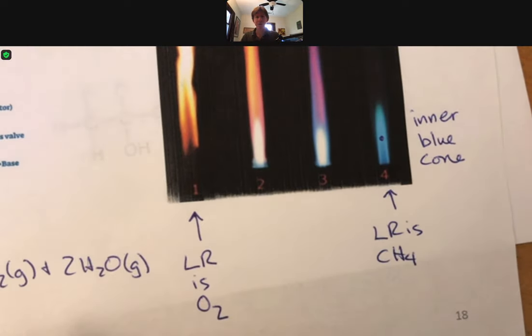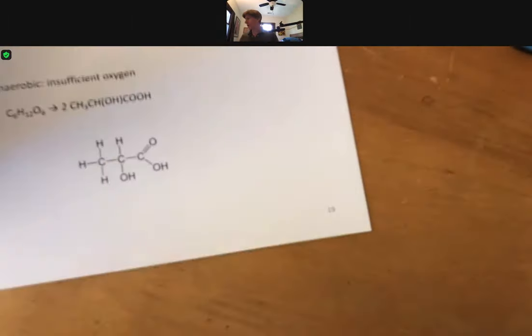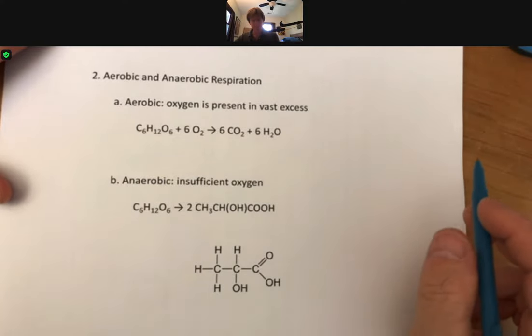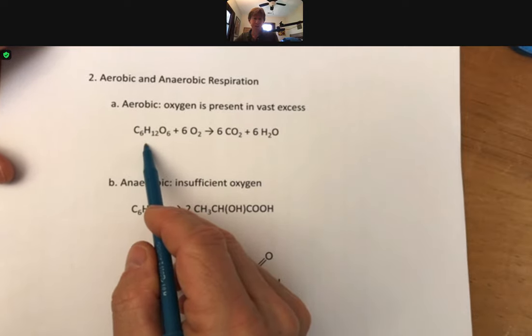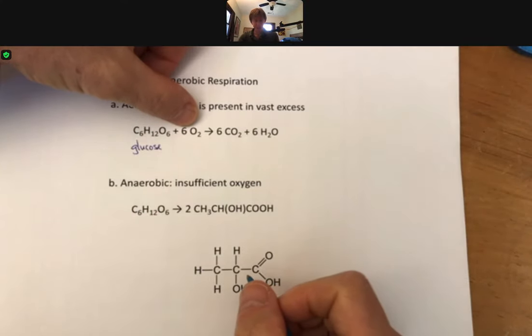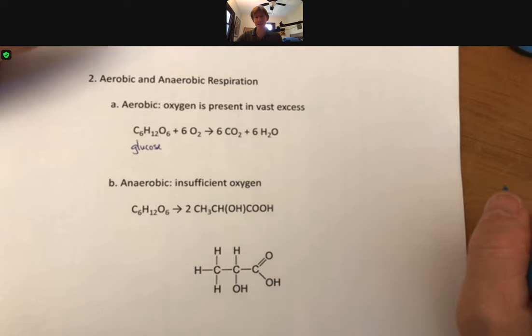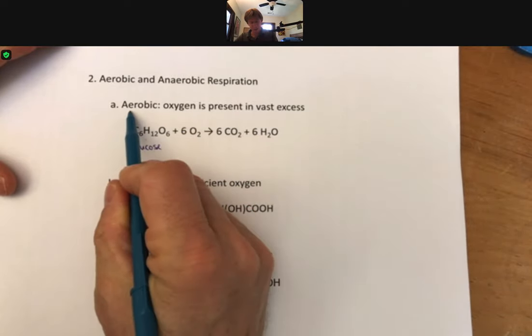Now a more biology example is this one: aerobic and anaerobic respiration. Respiration is how our body turns what can be represented here as glucose. When it reacts with oxygen, it turns into carbon dioxide and H2O. This is the chemistry version of this process. In your body, this takes many steps that you can study in your biology classes. But what we do know is that when oxygen is present in vast excess, it's aerobic respiration that occurs.